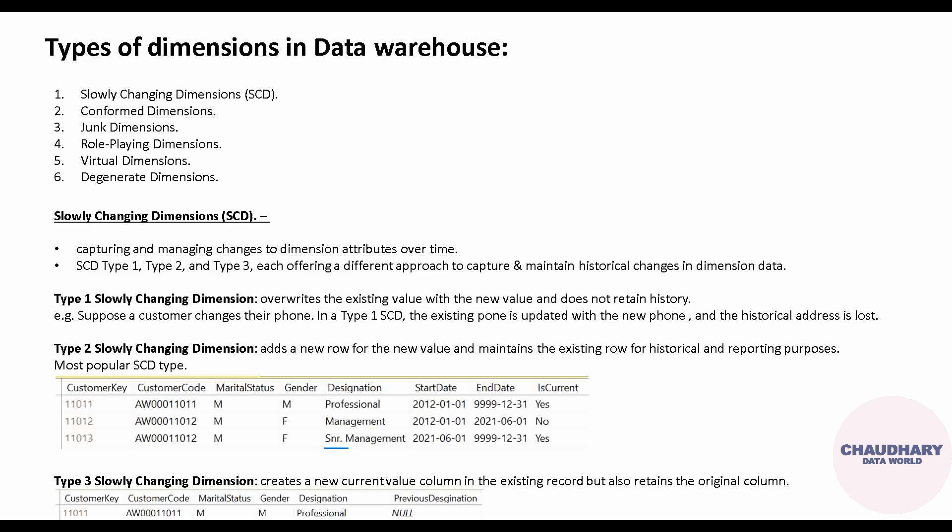A slowly changing dimension is the way to capture and manage changes to dimension attributes over time. In simple words, if you want to have both your historical and present data in your table, that is the use of slowly changing dimensions. Suppose you have a table with customer details — a particular attribute like phone number can change after some time.